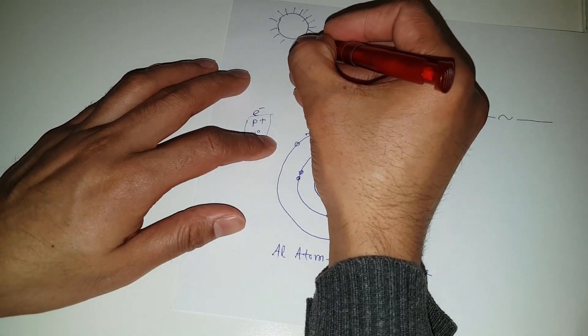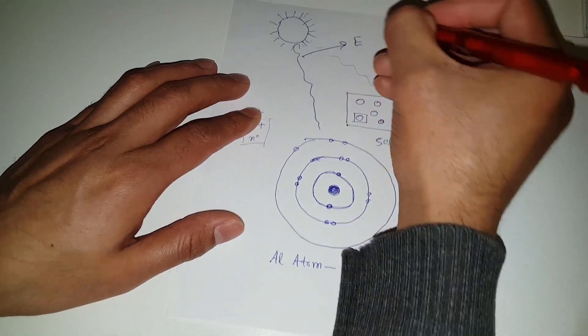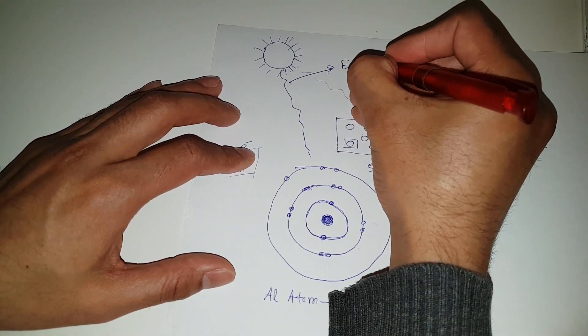You know, sunlight is an electromagnetic radiation, so-called EM. We call it in physics EM, electromagnetic radiation.